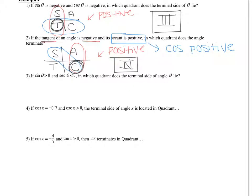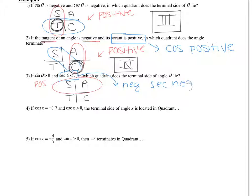Let's try example three together. We draw ASTC. It says sine of theta is greater than zero — greater than zero means positive. Where is sine positive? Here in A and S, quadrants one and two. Then it says secant is less than zero, meaning negative. This chart doesn't list secant directly, so we look for cosine. Cosine is positive in quadrants one and four, so secant is negative in quadrants two and three. The overlap is quadrant two.